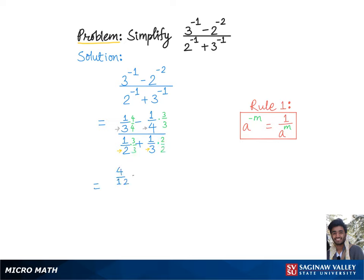Now since we have common denominators, we can simply operate on the numerators which gives us 4 minus 3 over 12 divided by 3 plus 2 over 6, which is equal to 1 over 12 divided by 5 over 6.